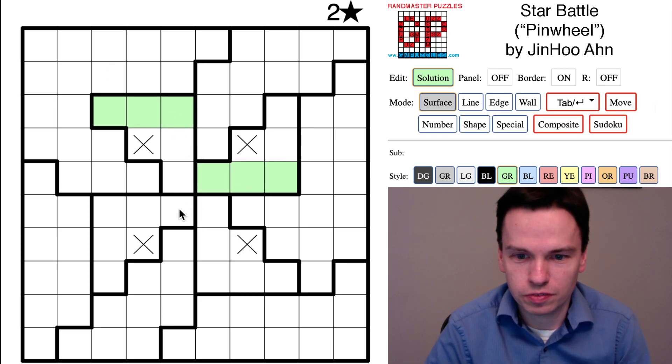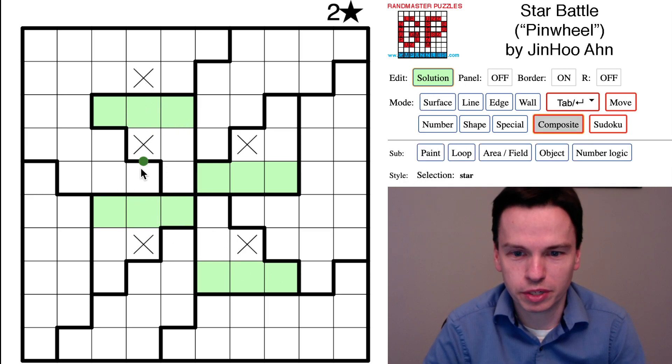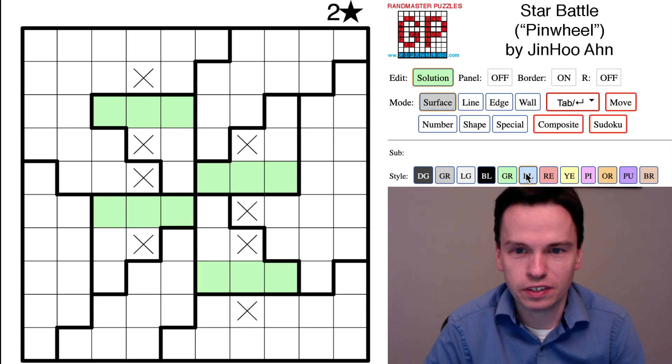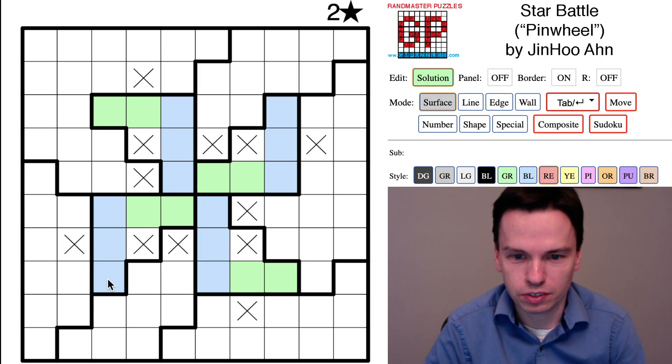I'd shown in the solve video yesterday that we have cases where we can color one by three rectangles in this puzzle that must have a star in them. A star is in one of these three cells, and because of that we can't have a star that's going to see all three of those in green. It would cancel too many, and you similarly can't have, if we use a different color for vertical shapes, stars right off these blue shapes.